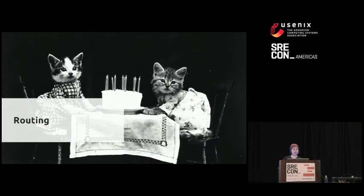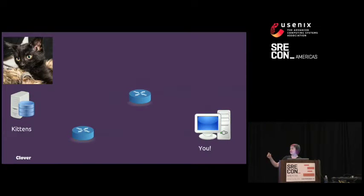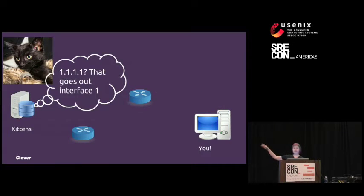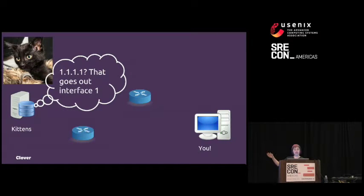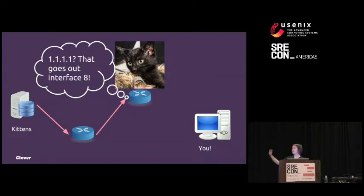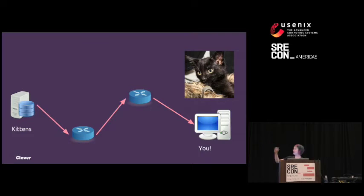Let's go back to the kitten pictures and see an example now that we know what routing tables are. I'm asking the server for my kitten fix, giving it my IP, so the server does a lookup in its routing table to discover which interface to send the kitten picture out of. It says, I know that goes out interface one, passes it to the next switch. The next switch says, I know how to get there, interface four, and so on. And then the kitten's delivered.